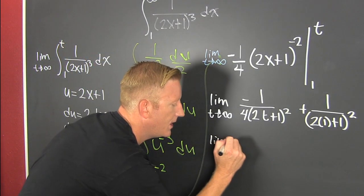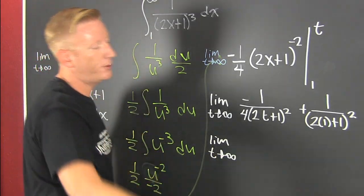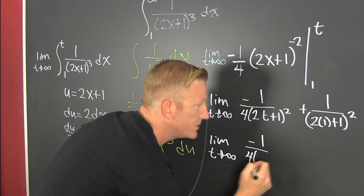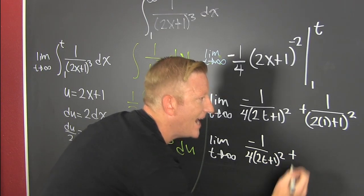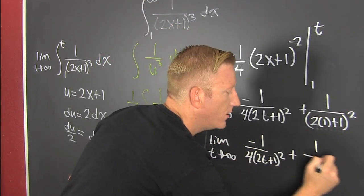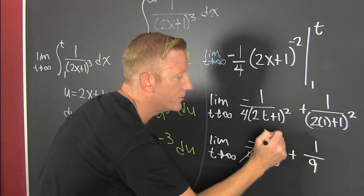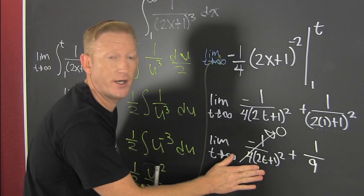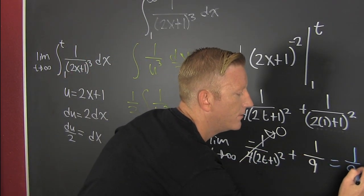So then this is the limit as t goes to infinity of minus 1 over 4 times 2t plus 1 squared, and then add that to - that's 3 squared, so this is 1 over 9. This sucker here, it goes to zero. Why? Because my denominator's getting big. One ninth.